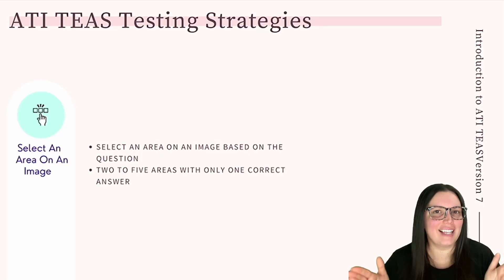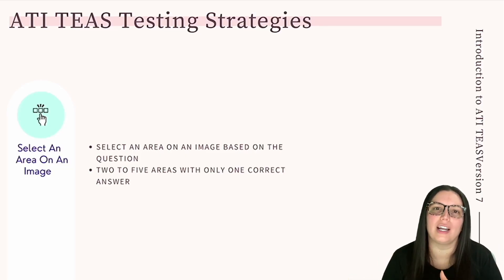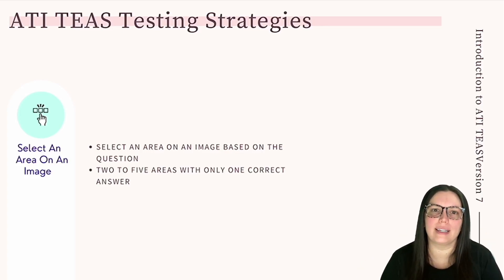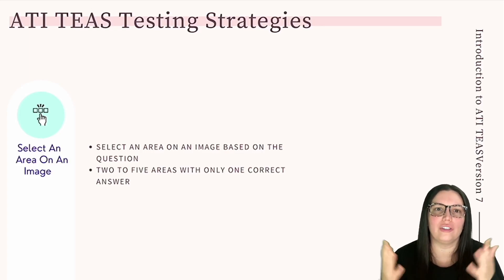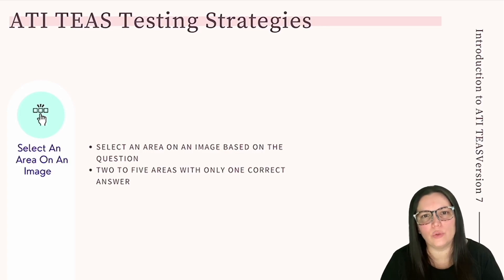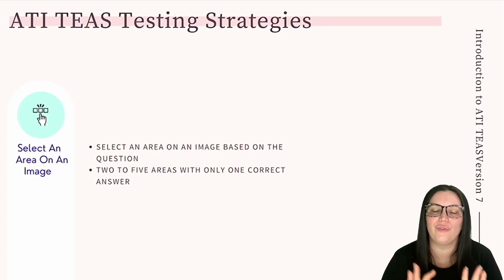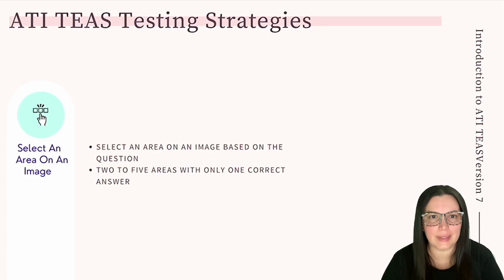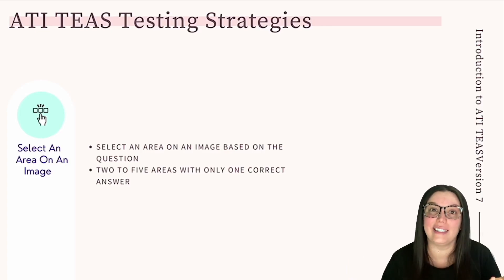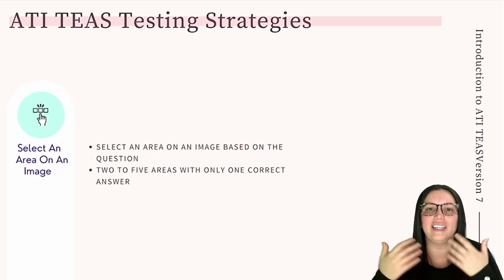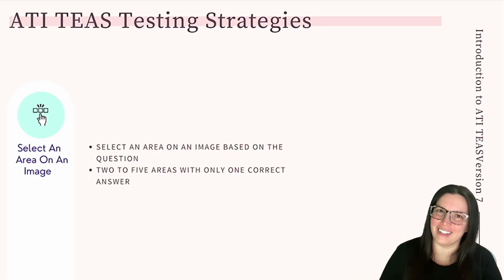For our last question type, we are talking about select an area on an image. These questions require you to select an area by clicking on an image based on what the question is asking. The image will typically have two to five clickable areas; however, only one of those areas is correct. The same tips for select all that apply questions apply here — the only difference is that you're selecting a part of an image instead of a text response.